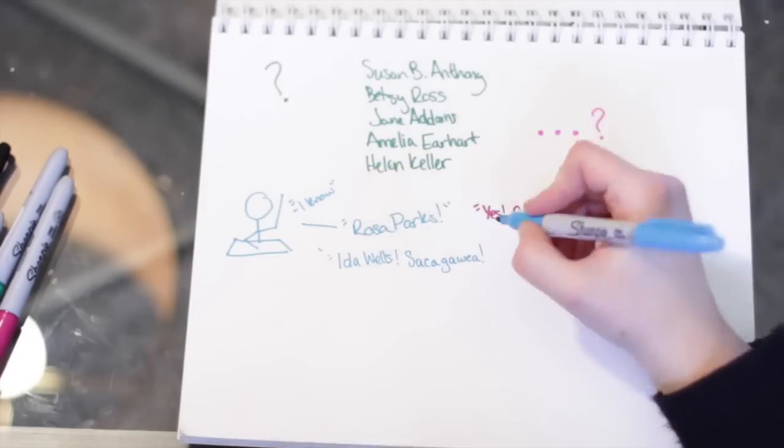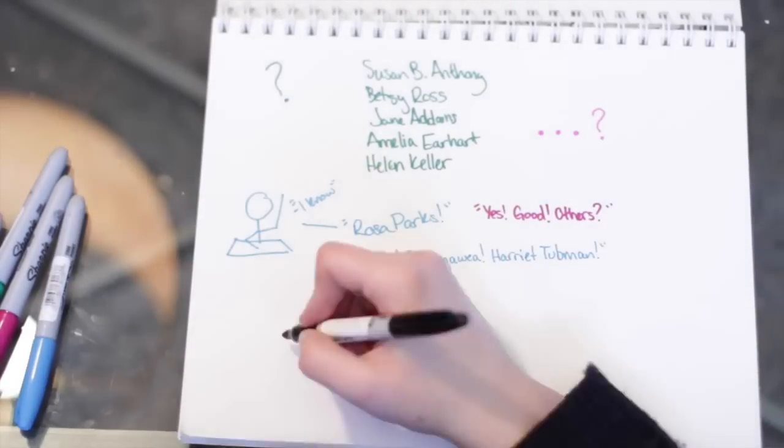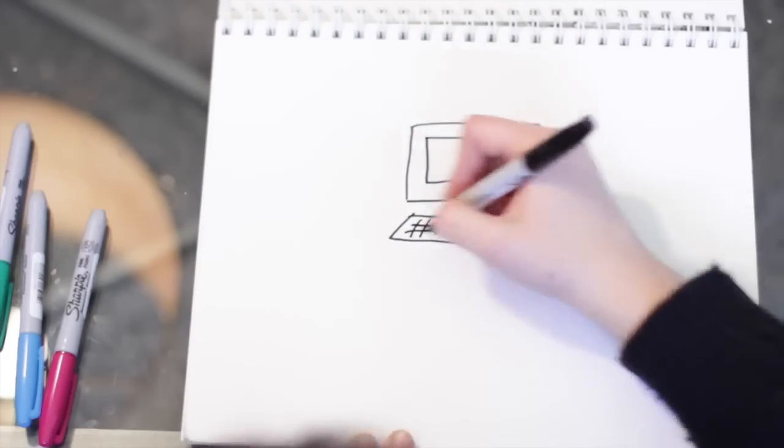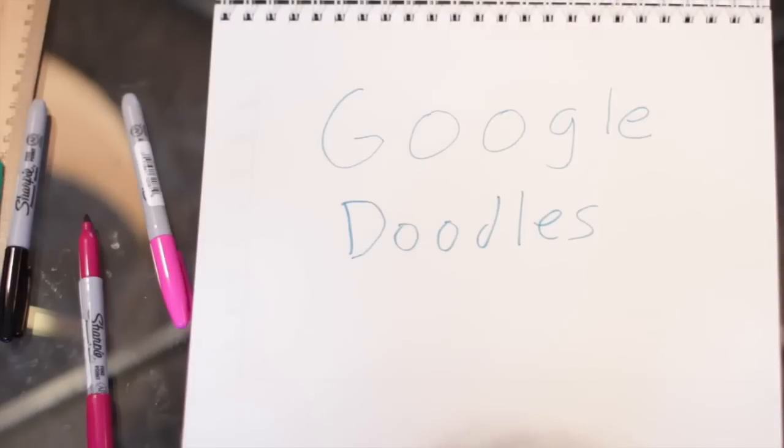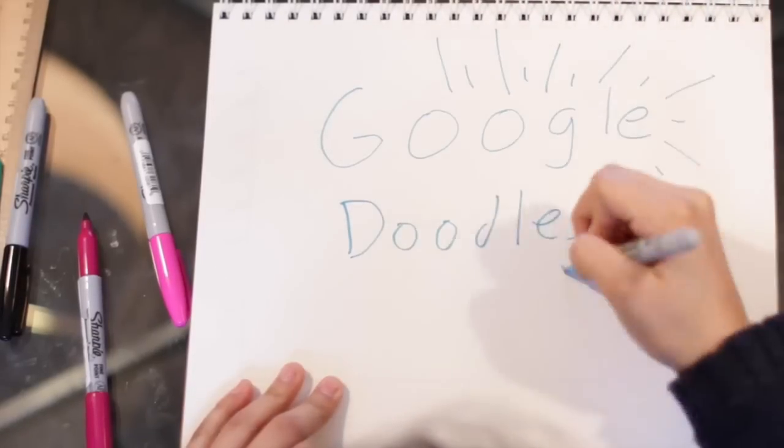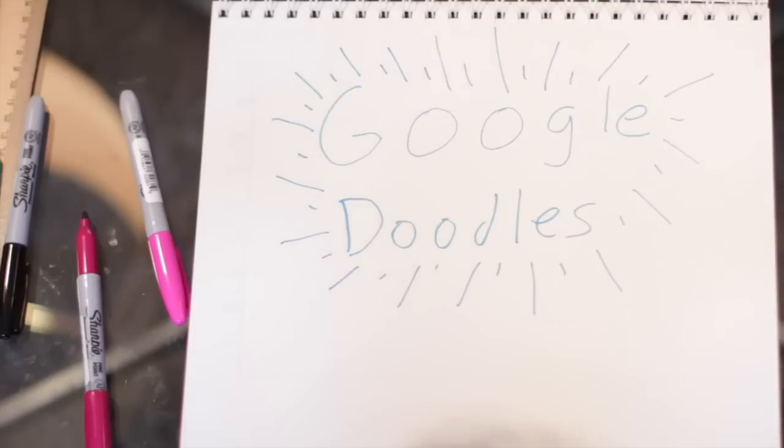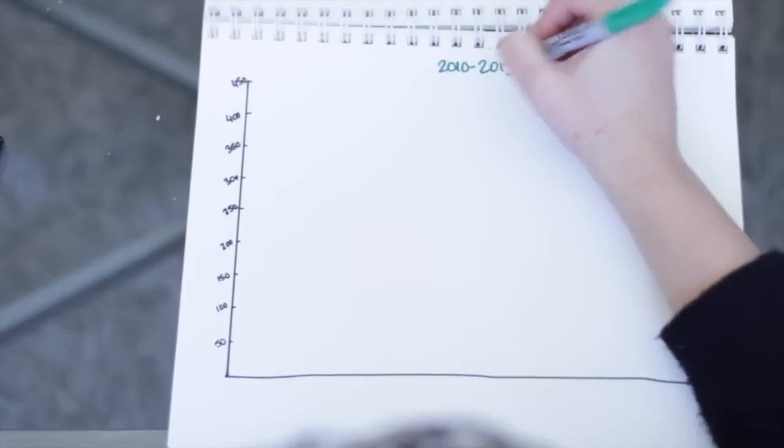But apart from school, there's plenty of other ways that we find out who matters in history. What about other places like the internet? You know how sometimes Google will change the logo on its homepage to celebrate holidays and an important person's birthday? Google doodles. Those are another way we learn about history.